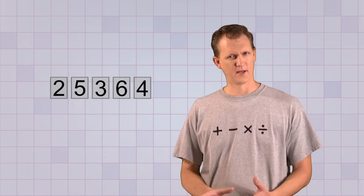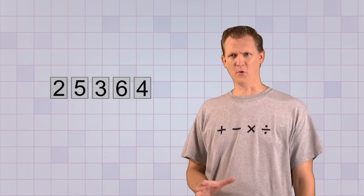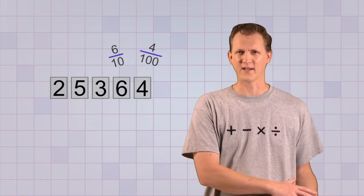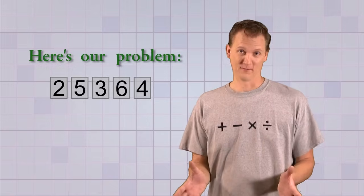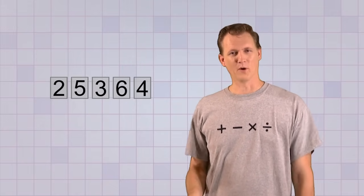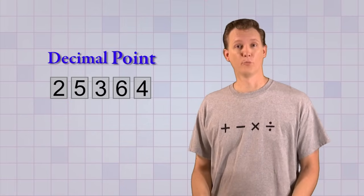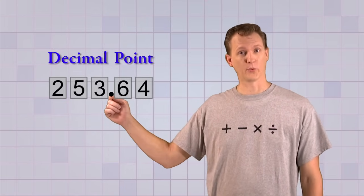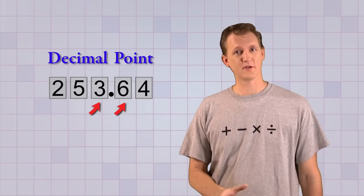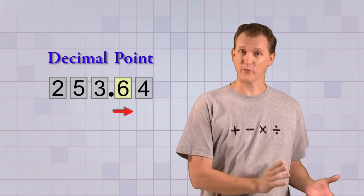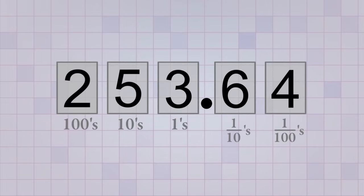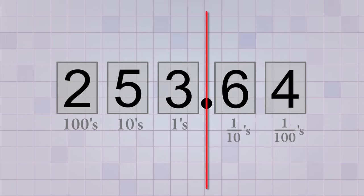Uh-oh, looks like there's a problem. This number looks like 25,364, but we only added tiny little fractions to our 253 — it can't be that big! We can't tell which number place is which because they all look the same. What we need is a kind of marker that will help us tell them apart. That marker is called a decimal point. The decimal point is just a dot that we always put right between the ones place and the tenths place. That way we always know that the ones place is on the left of the decimal point and the tenths place is on the right.